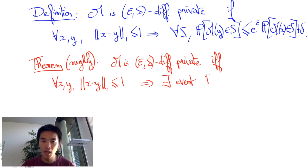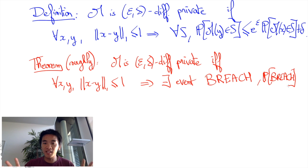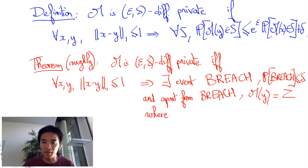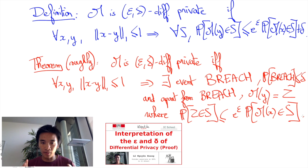Apart from the occurrence of some event breach that has probability at most delta, m of y will be indistinguishable from an epsilon differentially private response with respect to m of x. I will detail the formal meaning of this cumbersome phrase in a future video.